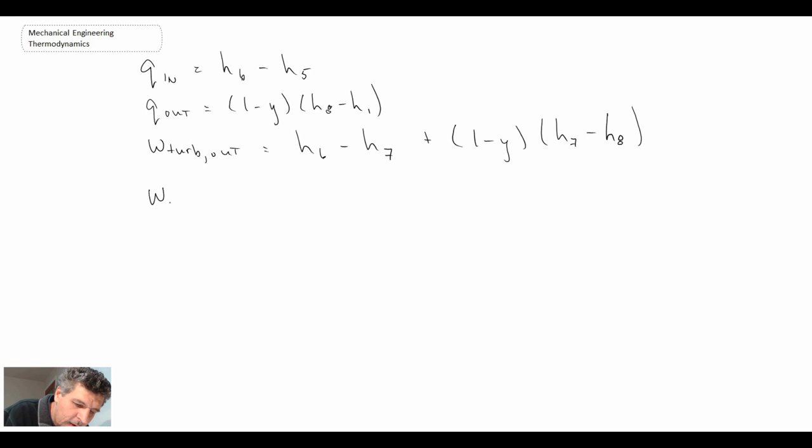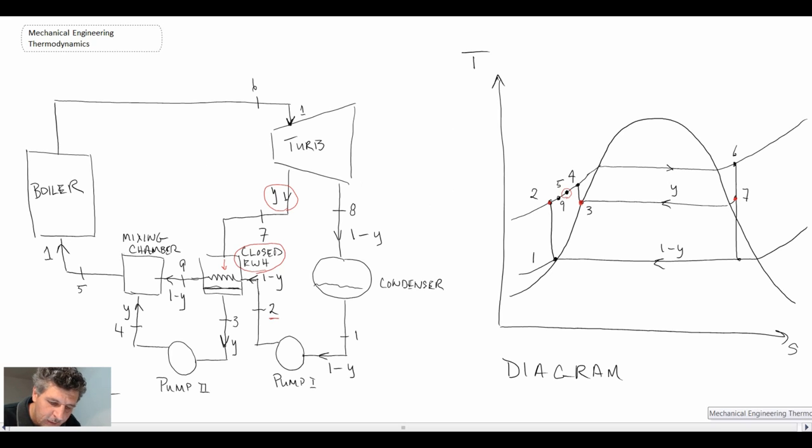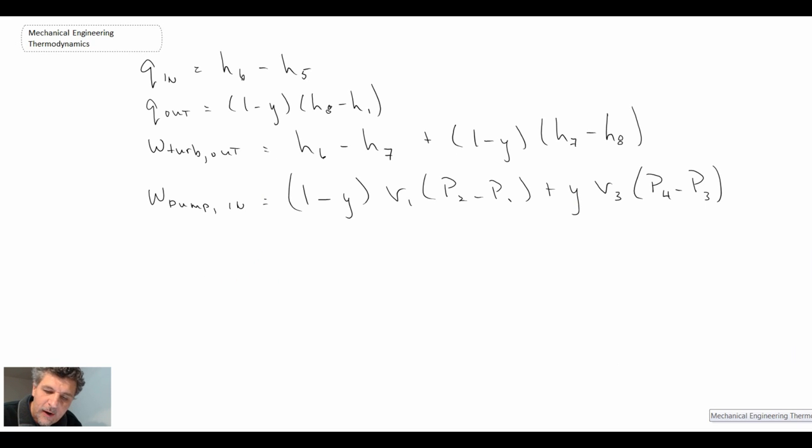And work pump in. So let's take a look at our schematic here. We have two pumps: pump there, pump there, pump one, pump two. And we have different mass fractions, (1 - Y) and Y, going through both of them. And that's why we have the two components in the equation there.